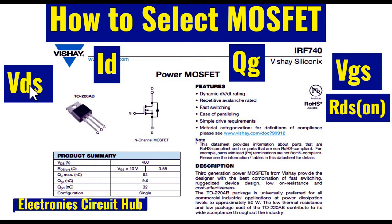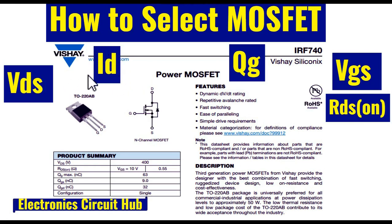What is VDS? The VDS of a MOSFET is the drain-to-source voltage of the MOSFET when the gate is off — that means your VGS equals zero. What is ID? ID is the drain current, or sometimes you can call it continuous drain current.